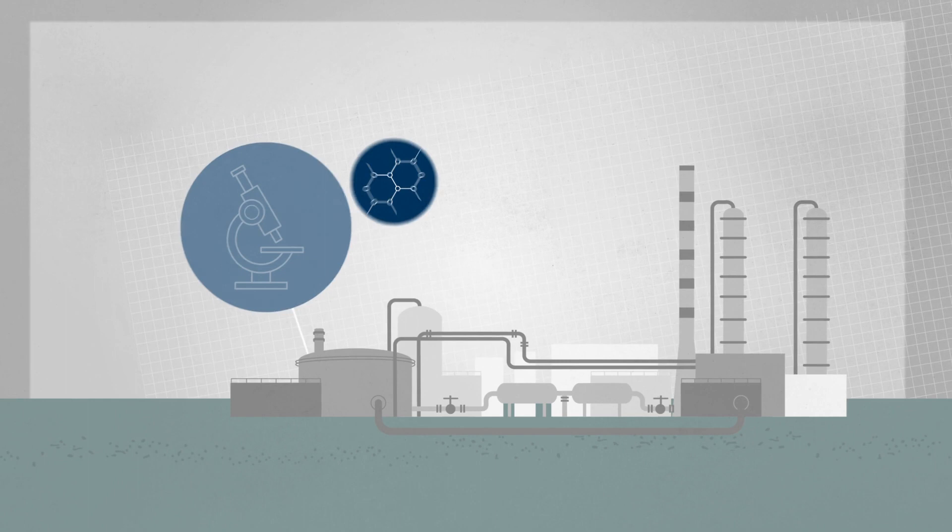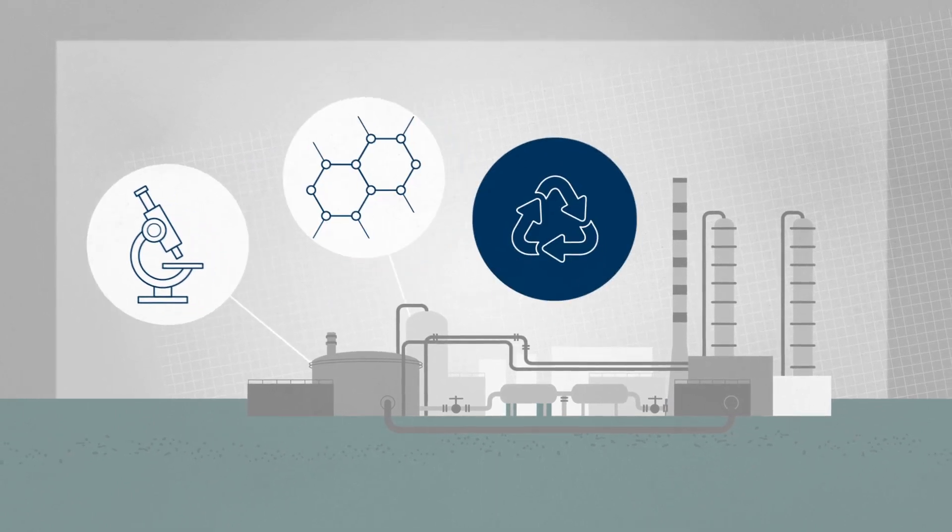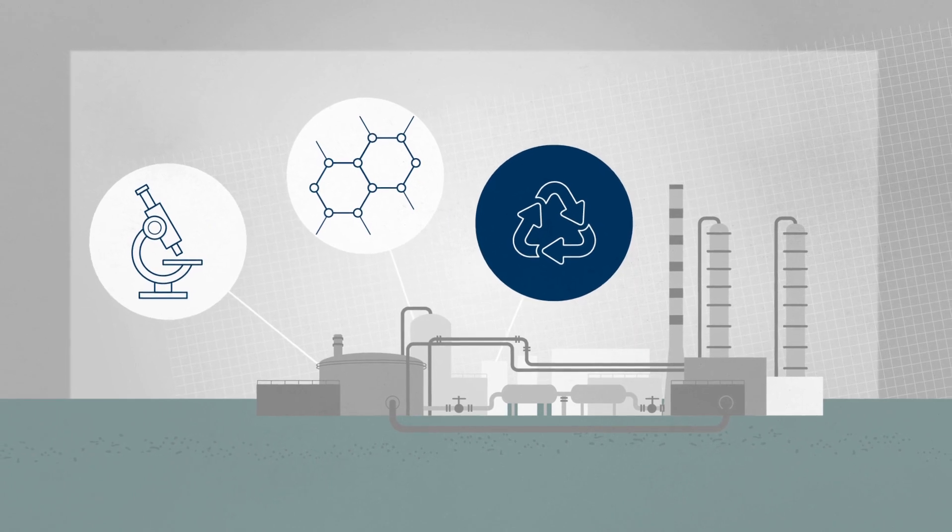Basically, a refinery is a gigantic laboratory where crude oil is broken down to its components. Environmentally harmful elements are then removed, and when the pieces are put back together, you get more efficient products that are more environmentally friendly.